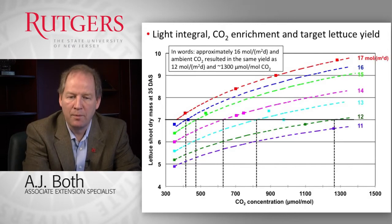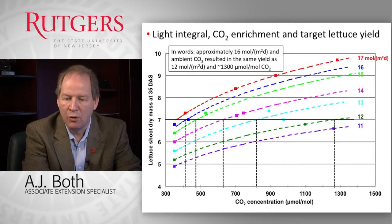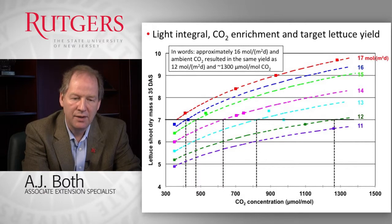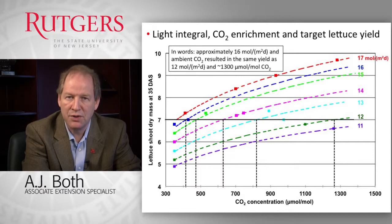To drive that point home, I want to show you this graph that was made from experiments done on lettuce plants, where on the horizontal axis you're looking at the carbon dioxide concentration. In this case, we use the unit of micromole per mole, which is equivalent to parts per million. On the vertical axis, you see the shoot dry mass — the amount of dry mass accumulated in a period of 35 days from seed. The curved lines represent different daily light integrals provided to grow these plants.